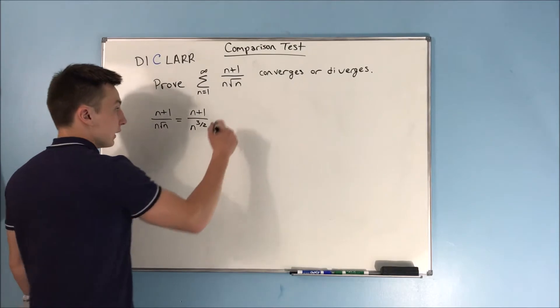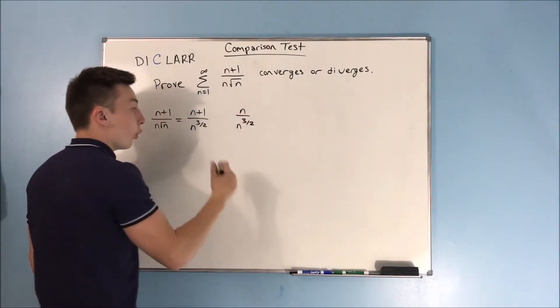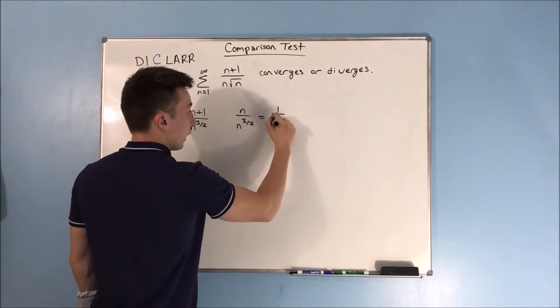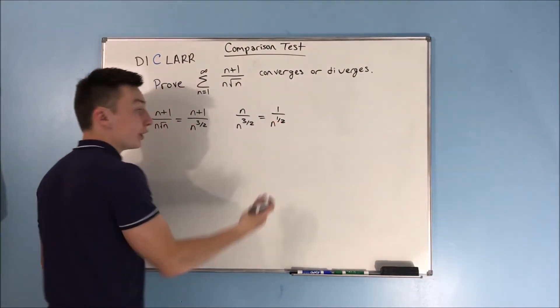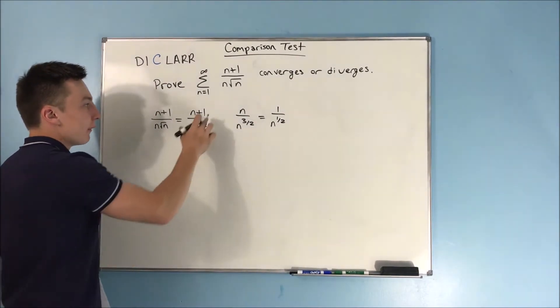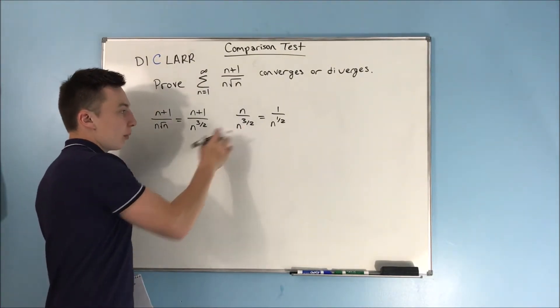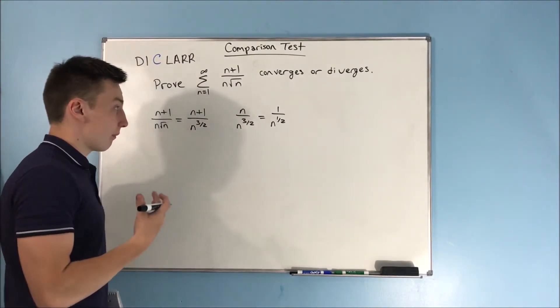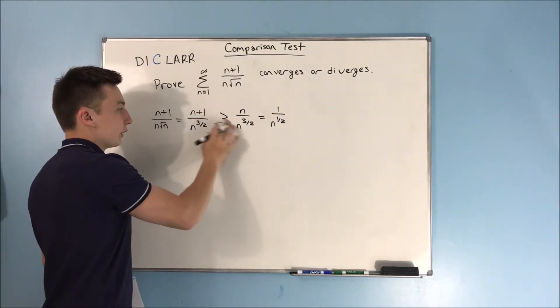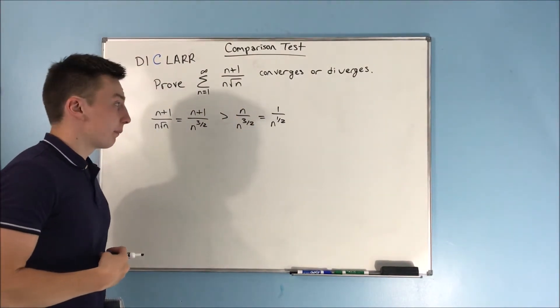So what we can do is compare it to n over n to the 3 halves, which also happens to be the same thing as saying 1 over n to the 1 half, which is a p series. Now what's the relationship between these two? Well, if you have this numerator that's always larger than the numerator over here, that's going to tell you that this is always going to be greater than n over n to the 3 halves.